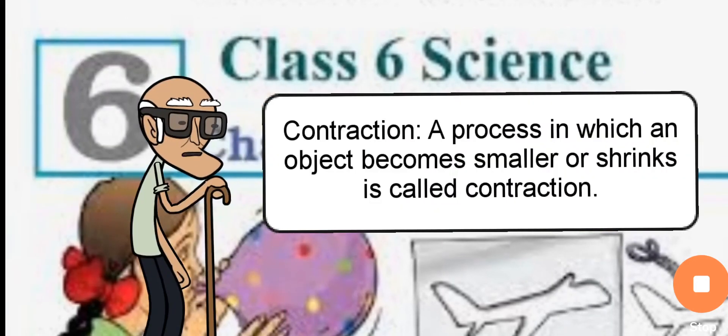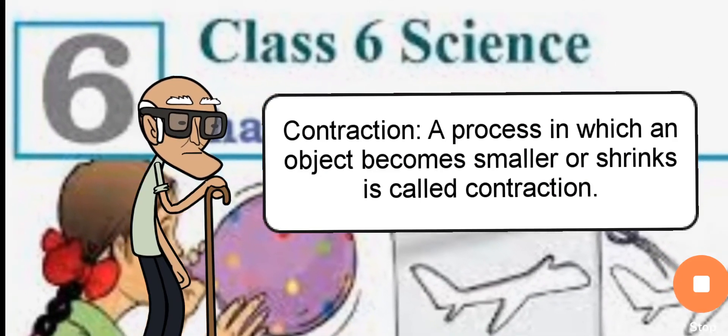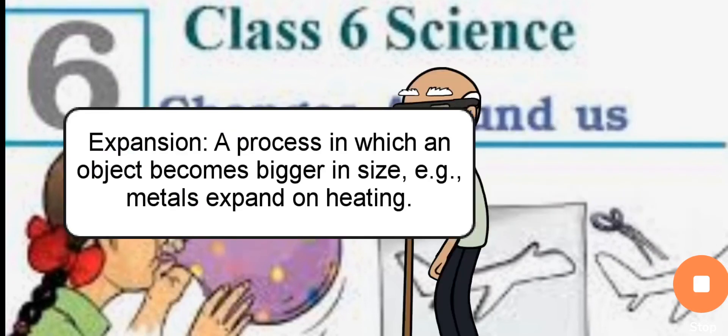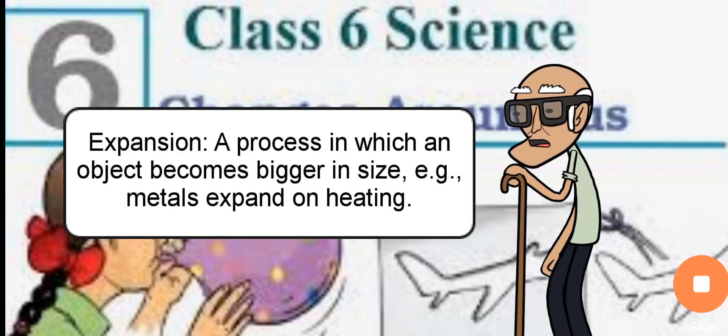Next thing is contraction. A process in which an object becomes smaller or shrinks is called contraction. Next thing is expansion. A process in which an object becomes bigger in size is called expansion.